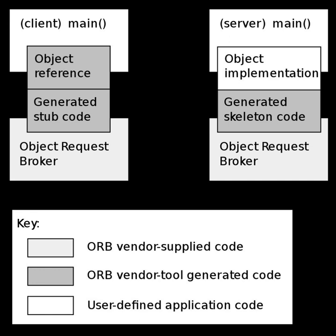Since the C language is not object-oriented, the IDL-to-C mapping requires a C programmer to manually emulate object-oriented features. In order to build a system using a CORBA-based distributed object interface, a developer must obtain or write IDL code defining the object-oriented interface. Typically, an ORB implementation includes a tool called an IDL compiler that translates the IDL interface into the target language. A traditional compiler then compiles the generated code to create the linkable object files for use in the application.